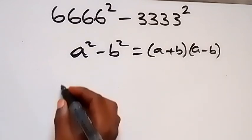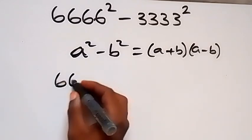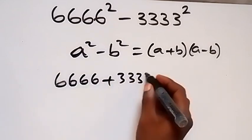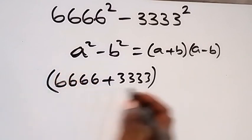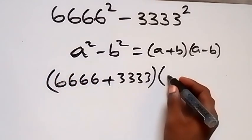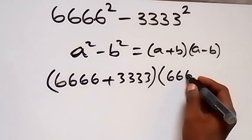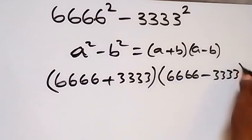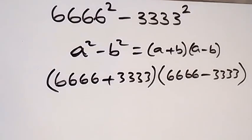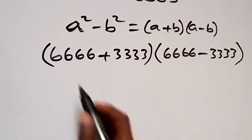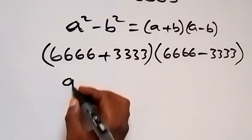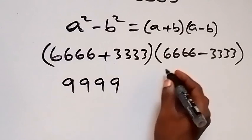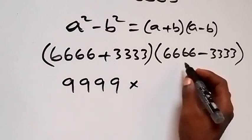Then we have 6666 plus 3333, multiplied by 6666 minus 3333. And when we have this together in the next step, this will become 9999, then multiply by 3333.